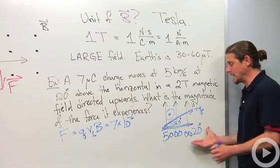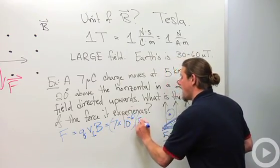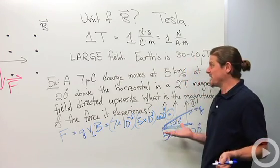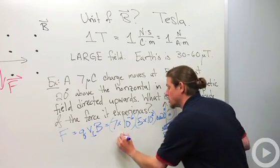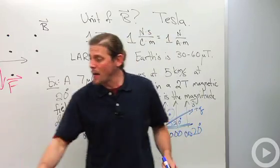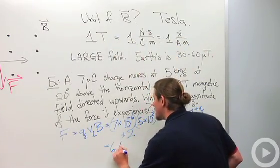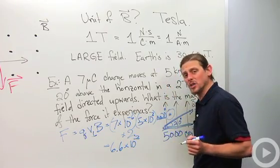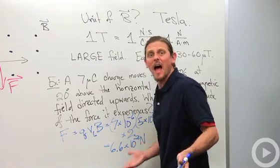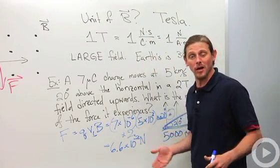And that's going to give us the V perp. So it'll be 5 times 10 to the 3, cosine of 20. And then I've got to multiply by the magnetic field, which is 2. So if I put all that in my calculator, I'll end up with 6.6 times 10 to the minus 2 newtons. Or we could say that as 66 millinewtons. And that's the force. That's Lorentz force law.